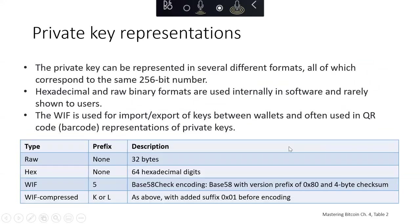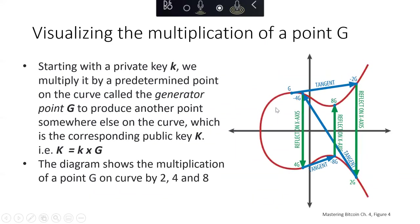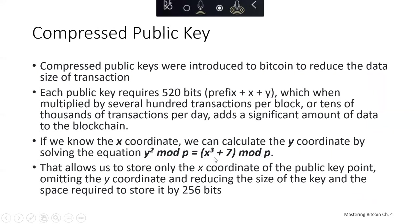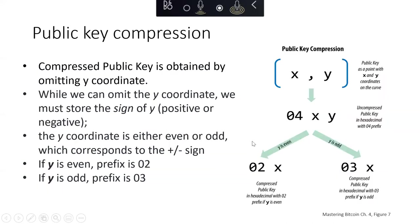Going back to our elliptic curve: if the Y value is positive it's in the upper part, if negative it's in the lower part. We can compute the Y value from the formula, but we need to know whether it was positive or negative. We save the sign by specifying 02 for Y even — positive — or 03 if Y is odd — negative. This compressed public key corresponds to the same full-size public key but saves a lot of space. Compressed public keys are gradually becoming the default across Bitcoin clients and having a significant impact on reducing transaction sizes and blockchain size.